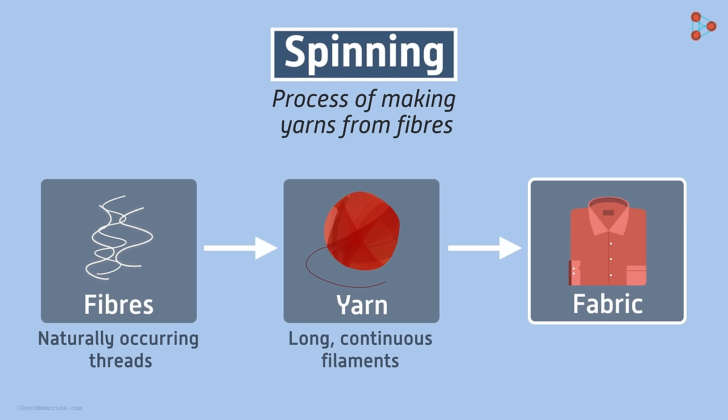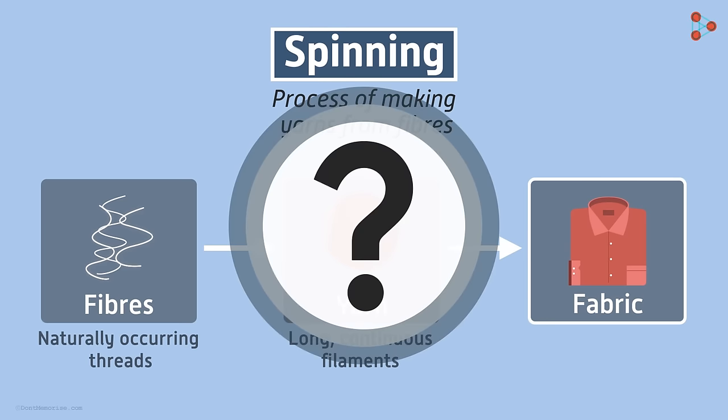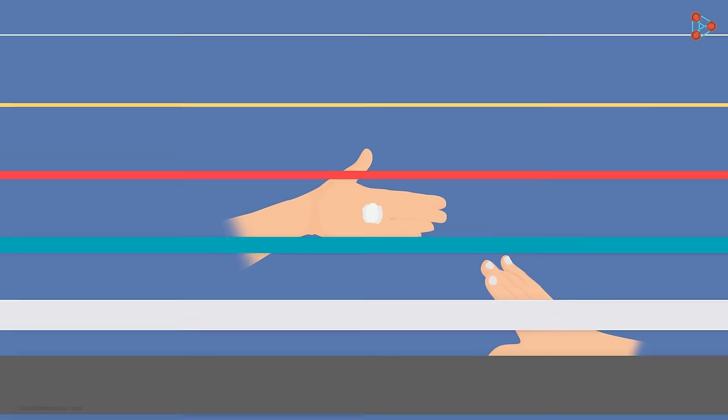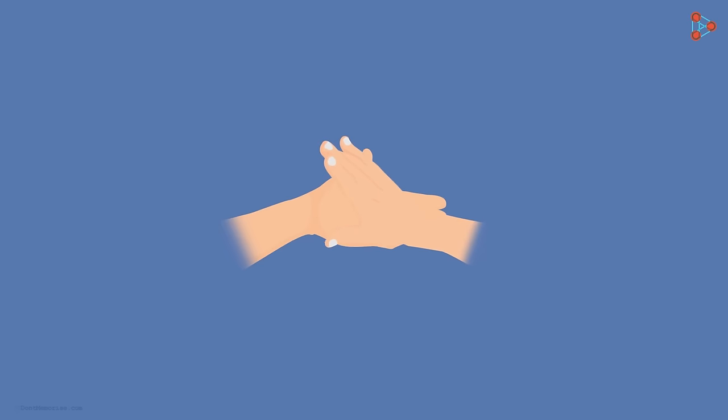So spinning is the process where the threads are converted into yarns. But how is this done? If you take a cotton thread between your palms and press it gently by rolling it this way, what you get is a slender long filament-like structure. This is nothing but yarn.